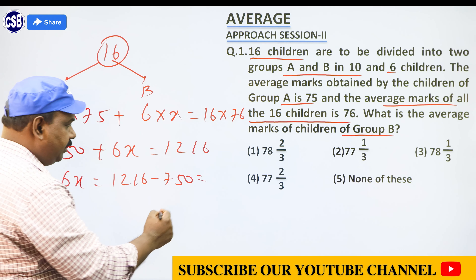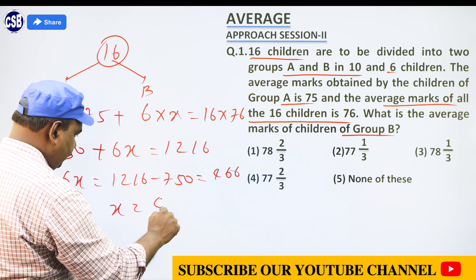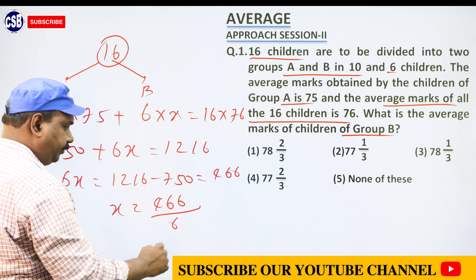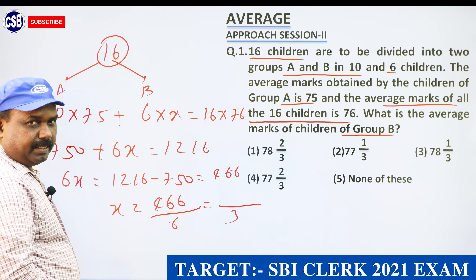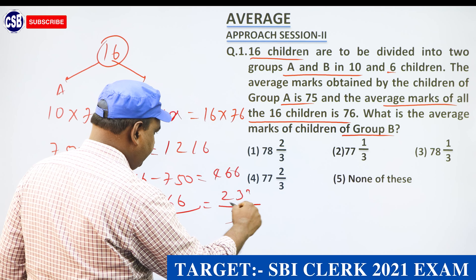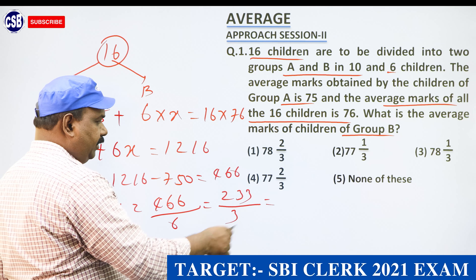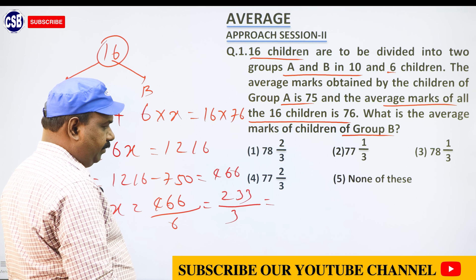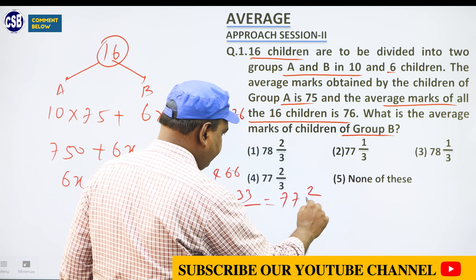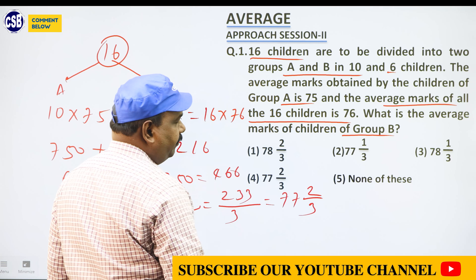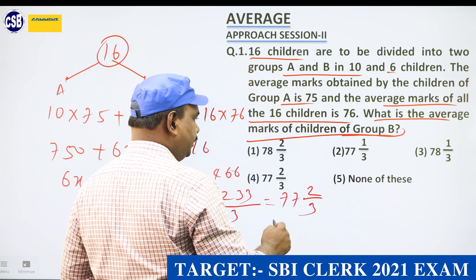16 multiplied by 76 gives 1216. Subtract 750, we get 466. So x equals 466 divided by 6, which gives 77 and 2 by 3. So the answer to the question — what is the average mark of group B — is 77⅔.